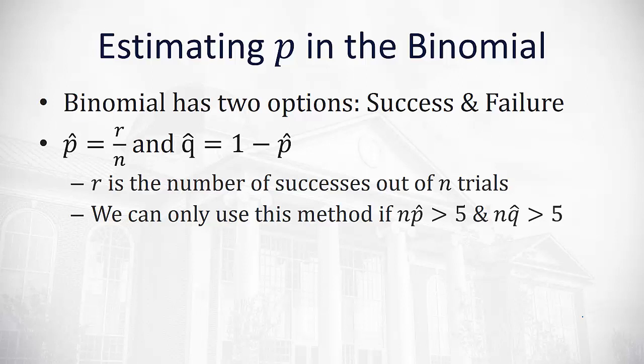The method we're going to talk about here with confidence intervals is only valid if the sample size times the proportion of success is greater than 5, and the sample size times the proportion of failure is greater than 5. If the numbers are too small, this method won't work.